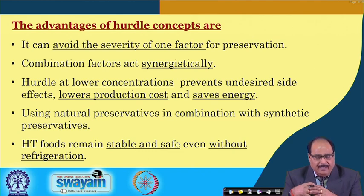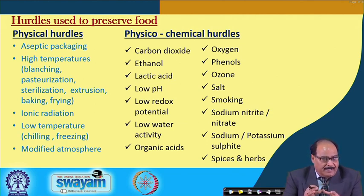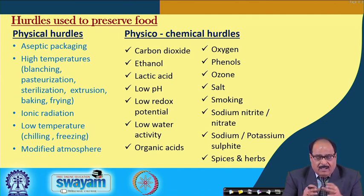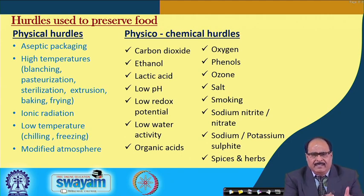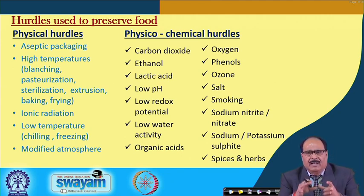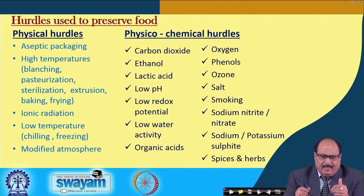Hurdle technology foods remain stable and safe for longer periods of time even without refrigeration. Different hurdles which can be used may include aseptic packaging, high temperature, ionizing radiation, low temperature, modified atmosphere, pressure, or even chemicals like lactic acid, low pH, salt, ozone, phenol, oxygen, and so on. The list is exhaustive. All these various physical, chemical, or physicochemical agents which can influence bacterial growth kinetics, bacterial decay kinetics, or enzyme inactivation kinetics can all be utilized in this process.